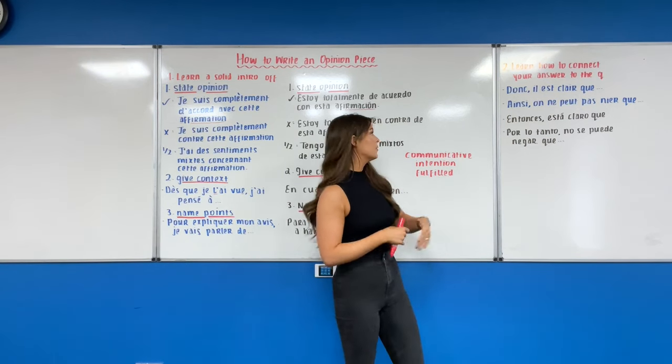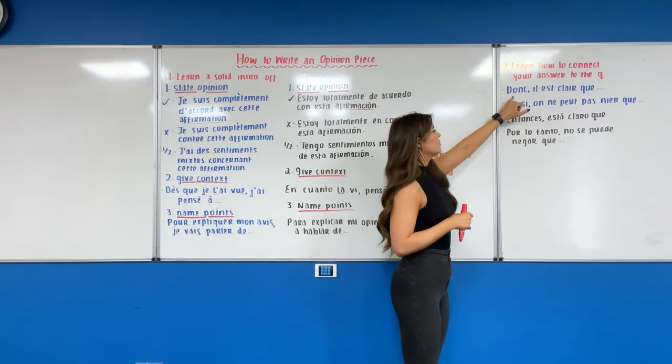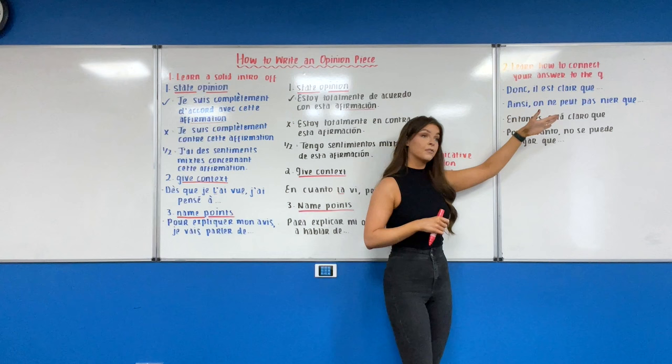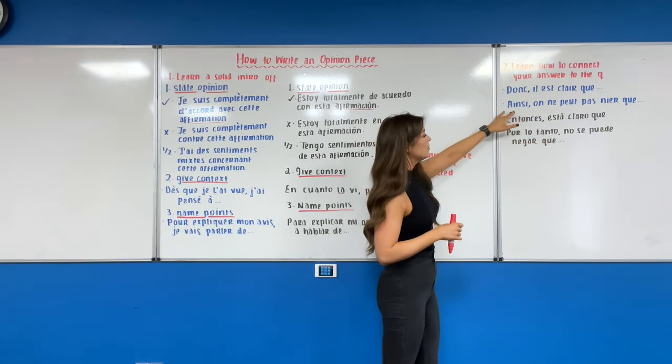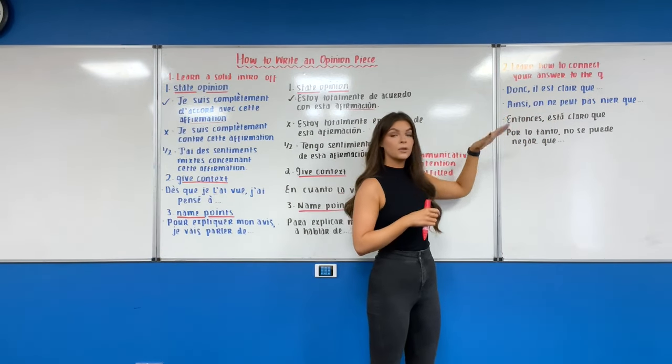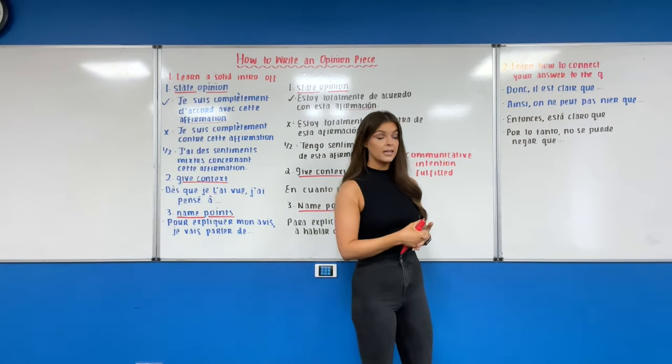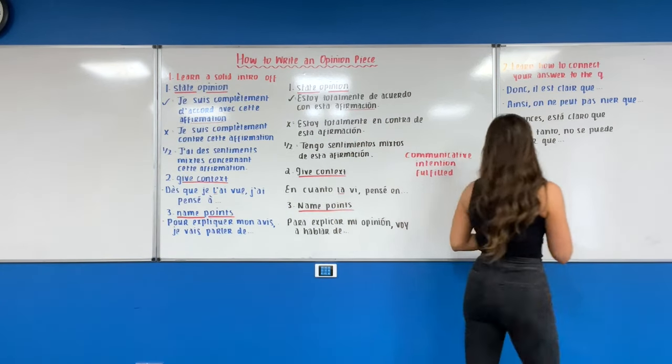So these structures here, again blue for French and black for Spanish, are just ways that you can use this at the end of each of your points and then figure out a way to connect it back to the title. What these both mean: in French we've got donc, it is clear that. Therefore it is clear that. And ainsi on ne peut nier que, therefore or thus you cannot deny that. The same thing again in Spanish.